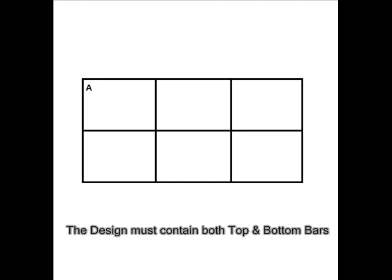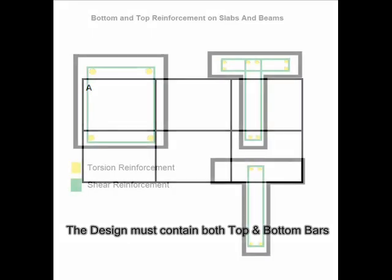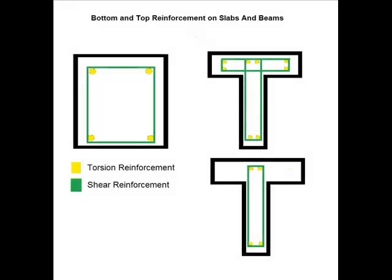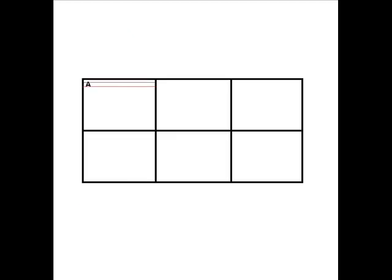At corner A, the slab is discontinuous on both sides. The torsion reinforcement shall consist of top and bottom bars, each with layers of bar placed parallel to the sides of the slab, and extending a minimum distance of one-fifth of the shorter span from the edges. The amount of reinforcement in each of the four layers shall be 75% of the area required for the maximum midspan moment in the slab.